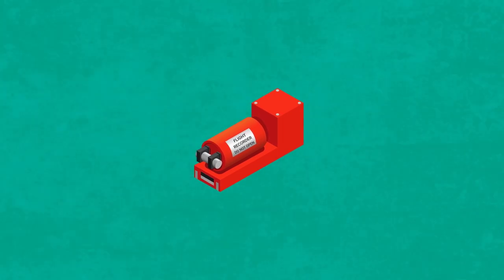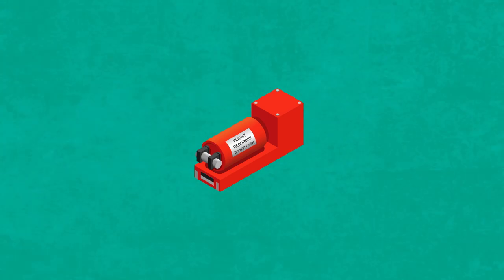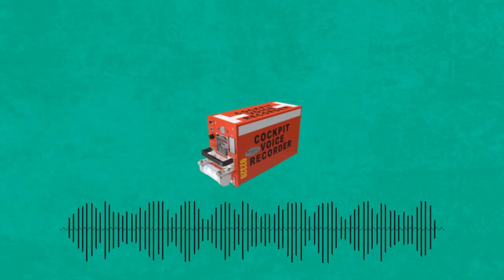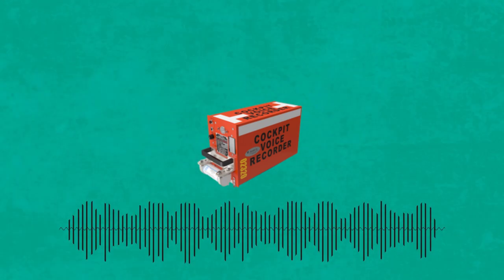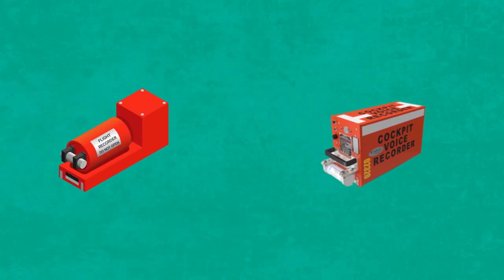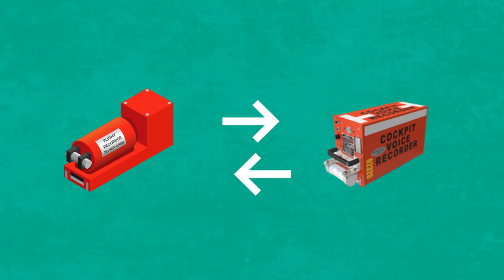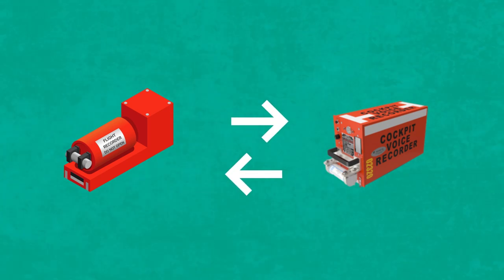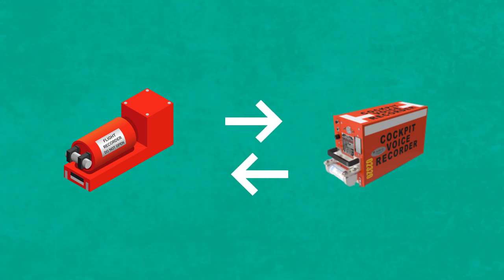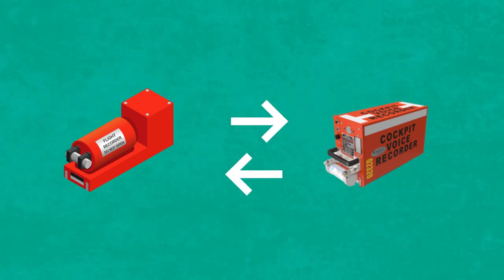It would be one thing to only see the FDR data and speculate based on that, but it's another thing entirely to hear the CVR and understand what the pilots were thinking — what they were aware of and what they were unaware of. Both boxes work in tandem to give us an insane amount of clarity about full-blown crashes or even close calls that could serve as a learning experience for the aviation community.